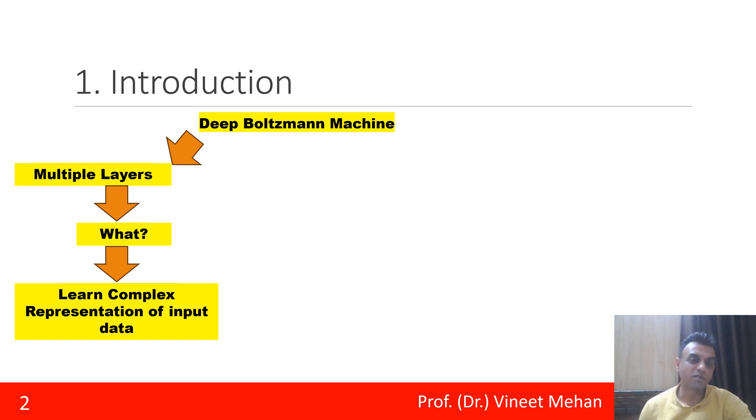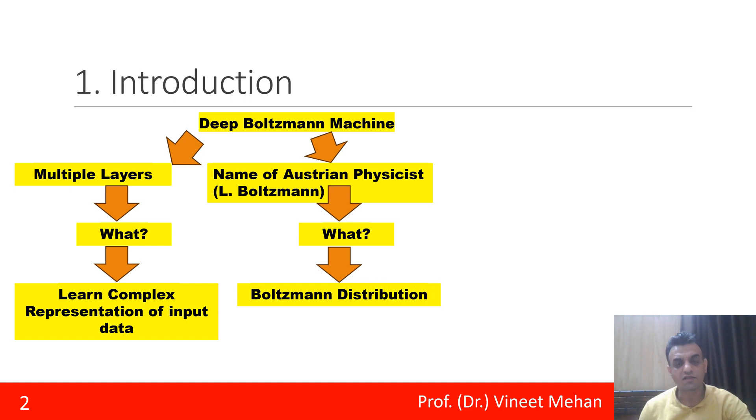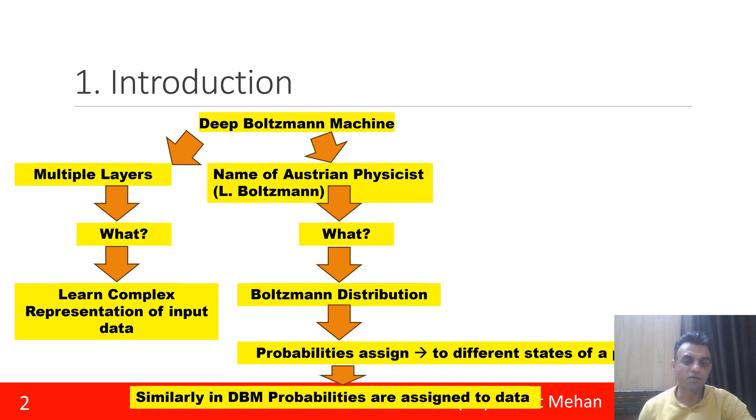The second word is Boltzmann. This is named after the Austrian physicist L. Boltzmann, who gave us Boltzmann distribution, in which probabilities were assigned to different states of a physical system. In the same way, we will be using probabilities that are assigned to data in our case.